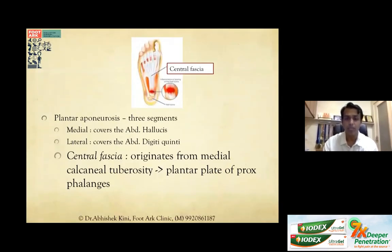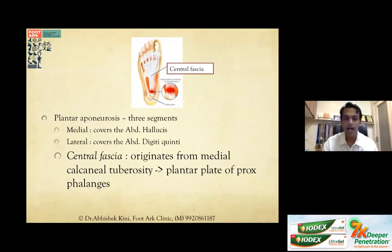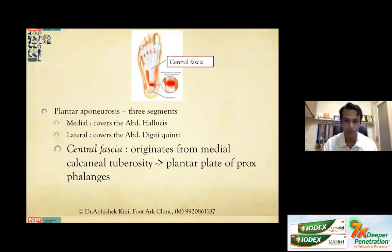Briefly on anatomy: the plantar aponeurosis has three segments — medial, which covers the abductor hallucis; lateral, which covers the abductor digiti quinti; and the central fascia, which is most pathologic, originating from the medial calcaneal tuberosity and extending to the plantar plate of the proximal phalanges. This central fascia is the most painful and most pathologic structure in most patients.